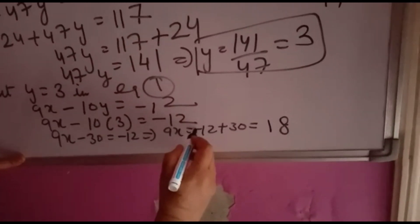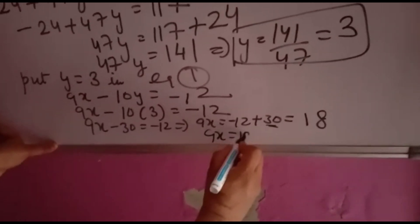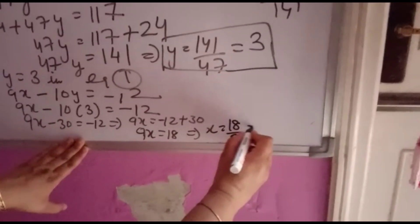So 9x, minus 12 plus 30 means 18. Because bigger number is 30, sign is plus, so it will come in plus. 9x is equal to 18. So x will become 18 over 9 that is 2.